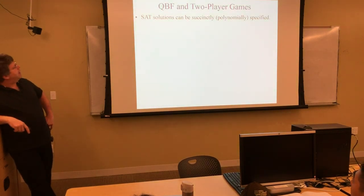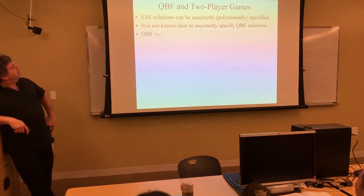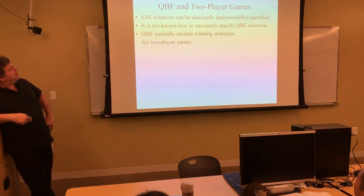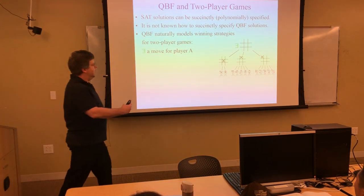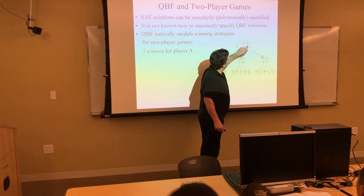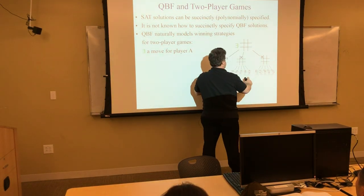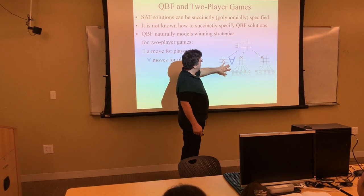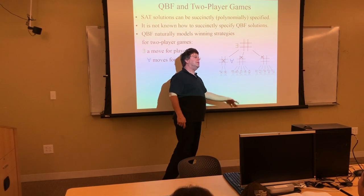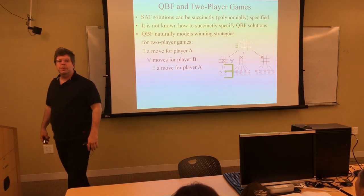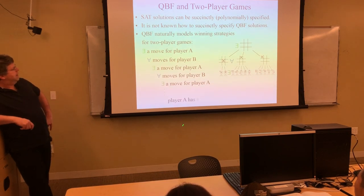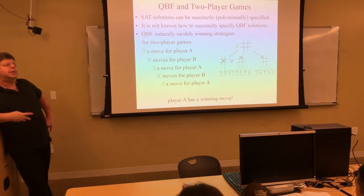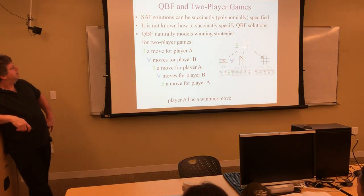Quantified Boolean formulas naturally model winning strategies in positional games involving two players, like tic-tac-toe or chess. Does there exist a move such that no matter where the adversary places their piece, there exists a move you can make, such that whatever the adversary does next, you'll end up in a winning position — back and forth — such that you end up with a winning position for you. That's a beautiful alternating quantification couching of how to win at a positional game, whether it's chess, Go, tic-tac-toe, or checkers.